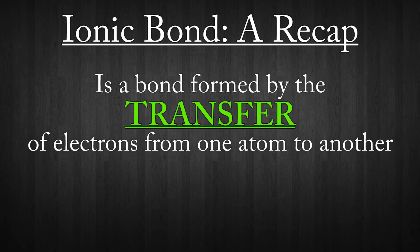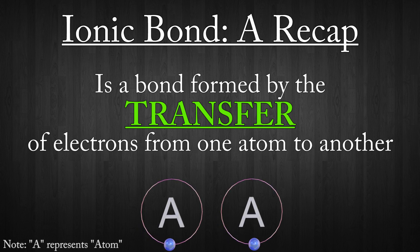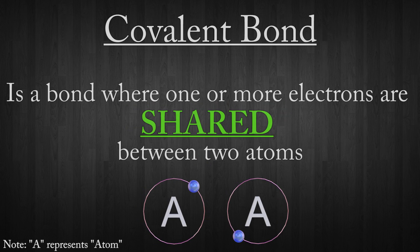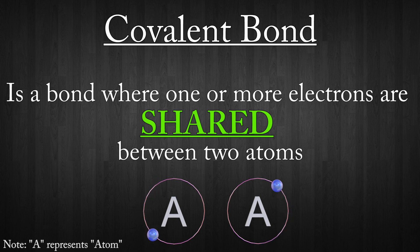A covalent bond is slightly different to an ionic bond. Instead of one atom donating an electron and another atom stealing an electron, as we saw in the ionic bond, with a covalent bond, the two atoms share one electron each by exchanging it backwards and forwards between them.